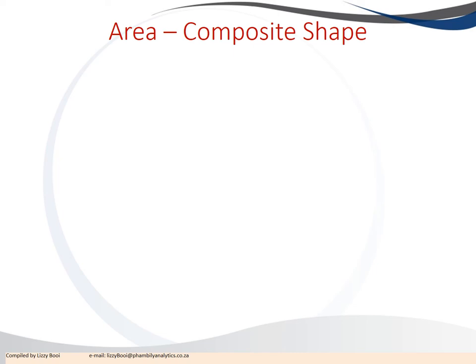Let's look at how to calculate the area of a composite shape. A composite shape is a shape that has multiple shapes in one.